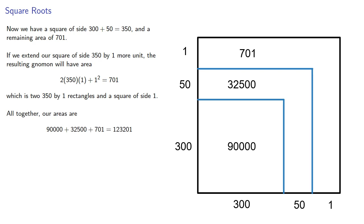All together, our areas are 90,000 + 32,500 + 701 = 123,201. So our square of side 300 + 50 + 1 = 351 has area 123,201, therefore √123,201 = 351.